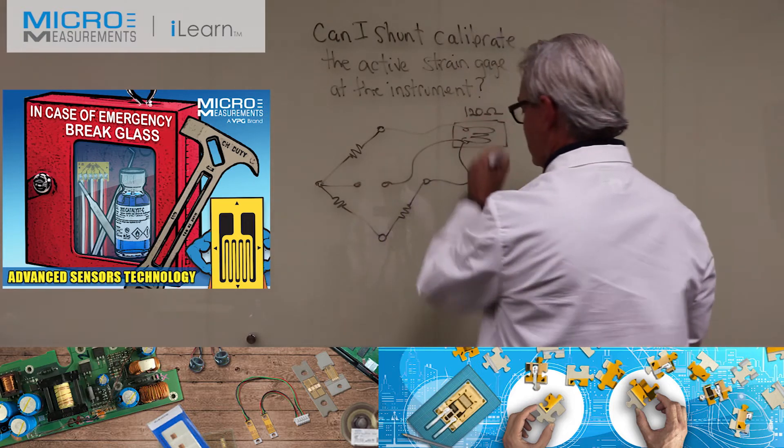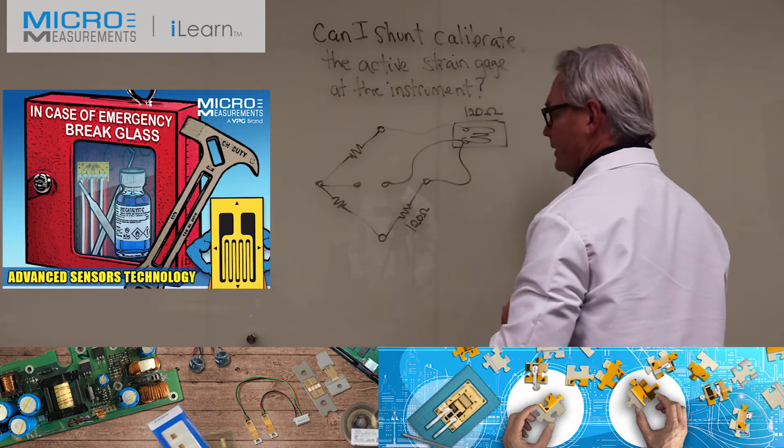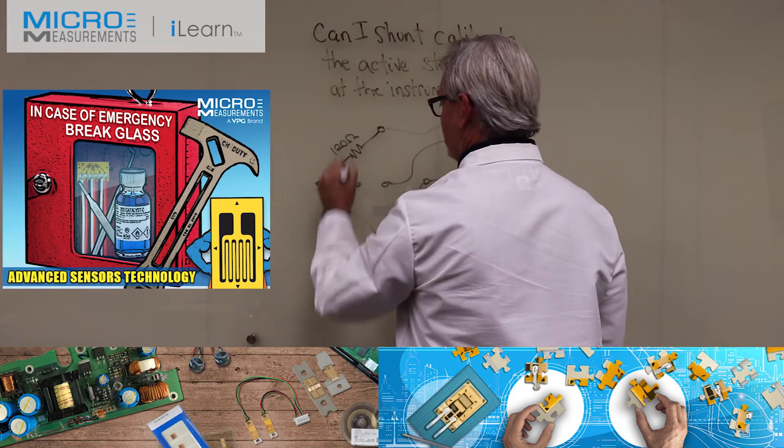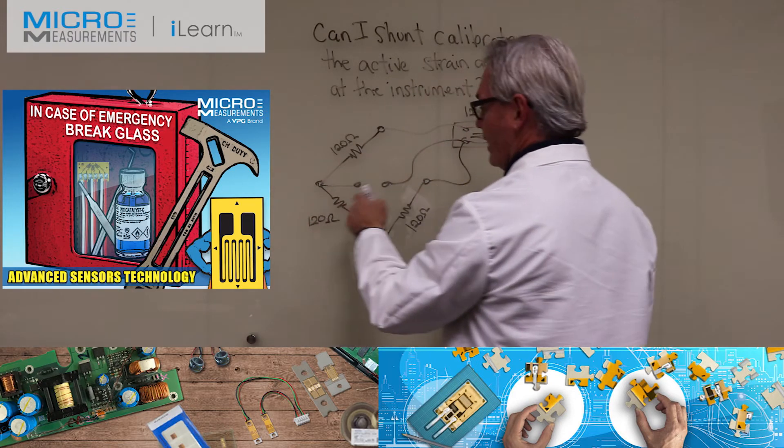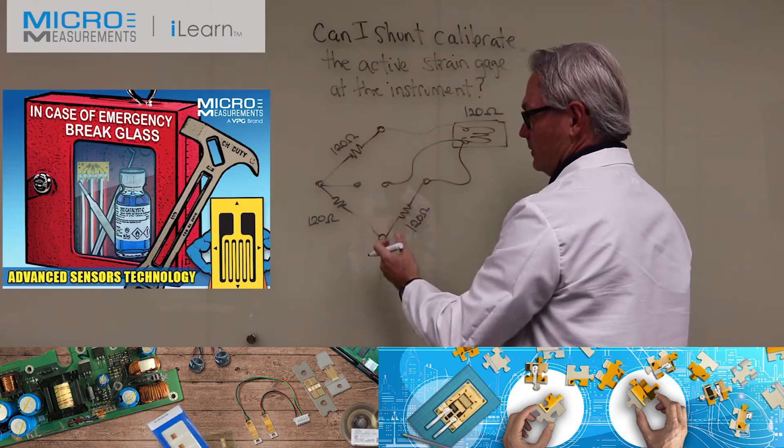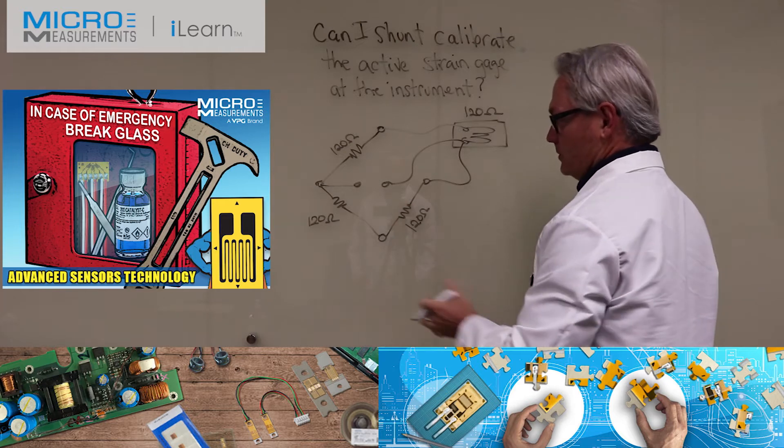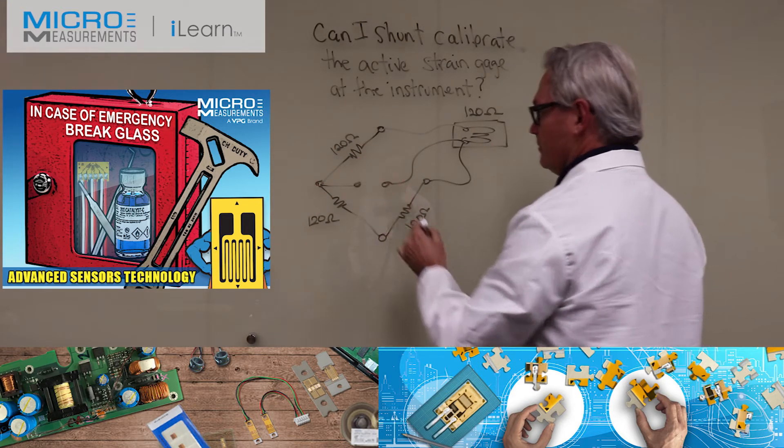If this strain gauge is 120 ohms, this resistor has to be 120. Let's assume that these are all 120 ohms. They don't have to be, but the internal half bridge could be 120, 350, or a thousand. Since they're on the other side of the bridge from the gauge and this dummy resistor, they could be any one of those values, but we'll assume for now they're 120.